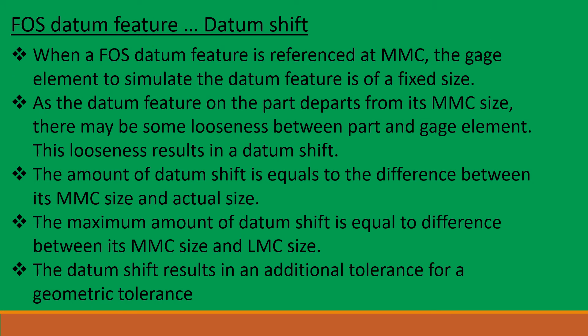Now let us see what datum shift is. When a FOS datum feature is referenced at MMC, the gauge element to simulate the datum feature is of a fixed size. As the datum feature on the part departs from its MMC size, there may be some looseness between the part and gauge element. This looseness results in a datum shift. The amount of datum shift equals the difference between its MMC size and actual size. The maximum datum shift equals the difference between its MMC size and LMC size. The datum shift results in an additional tolerance for a geometric tolerance.